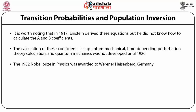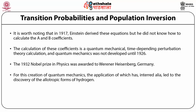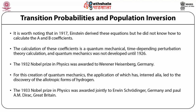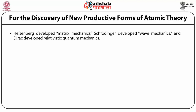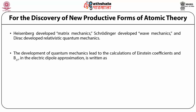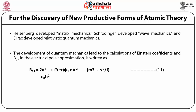The 1932 Nobel Prize in Physics was awarded to Werner Heisenberg for the creation of quantum mechanics, the application of which led to the discovery of allotropic forms of hydrogen. The 1933 Nobel Prize in Physics was awarded jointly to Erwin Schrödinger and Paul A.M. Dirac for the discovery of new productive forms of atomic theory. Heisenberg developed matrix mechanics, Schrödinger developed wave mechanics, and Dirac developed relativistic quantum mechanics. The development of quantum mechanics led to the calculation of Einstein coefficients; B21 in the electric dipole approximation is: B21 = (2π²/ε₀ℏ²) · |∫ψ*·E·ψ₁dV|².